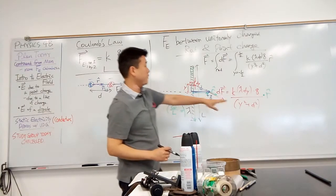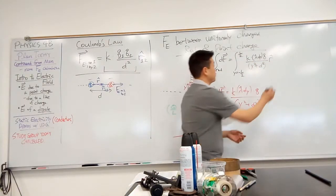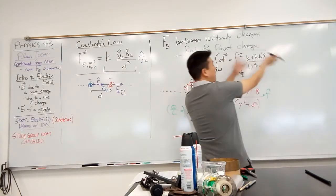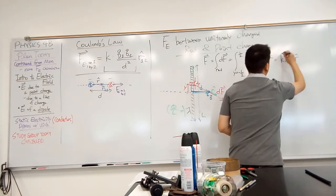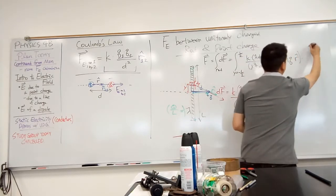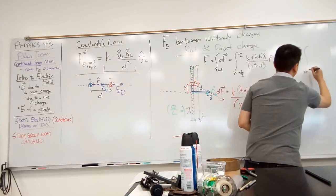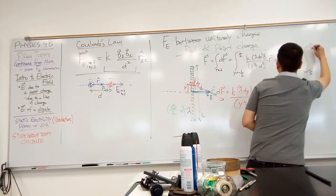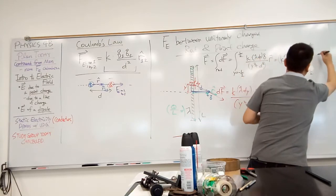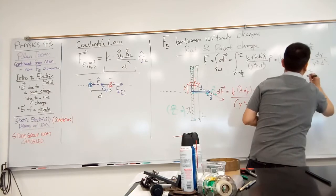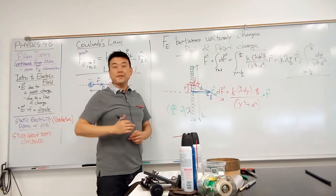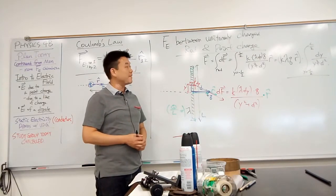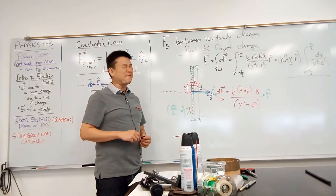And so everything here seems to be already in terms of y. So you write it out, factor out all the constant quantities, k lambda q r hat, times integral from minus l over 2 to l over 2, dy over y squared plus d squared. And you do all of this, you get an answer, and you look up the solution in the textbook, and you'll find that your answer is wrong. What went wrong?